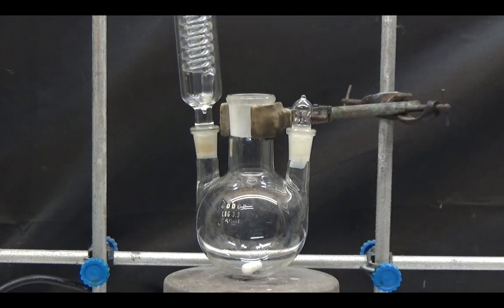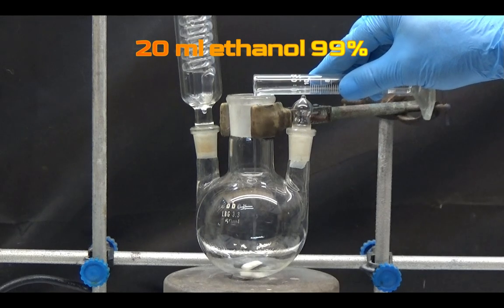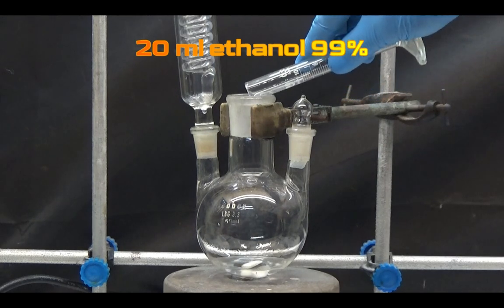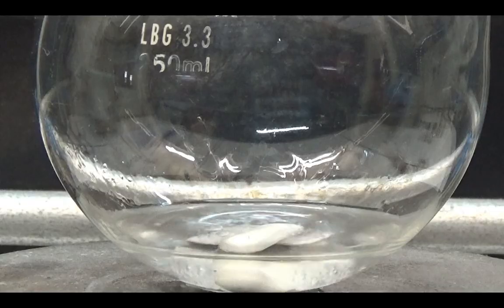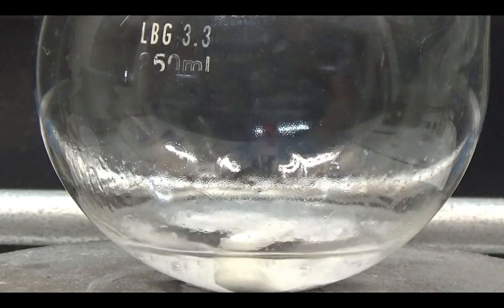In a three-necked flask with a reflux condenser and a thermometer, we put a stirring bar and add 20 milliliters of 99% ethanol. The sodium is added slowly and we wait for it to dissolve. To accelerate the reaction, we can heat it a little.